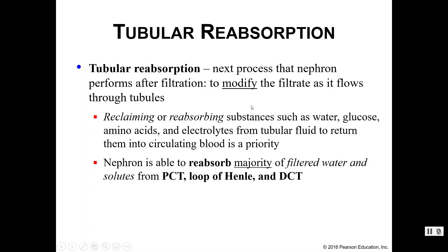Next is tubular reabsorption. After filtrate is created, we modify it as it goes through the renal tubule. You reclaim and reabsorb useful substances like water, glucose, amino acids, and electrolytes — quite a bit of the material in the filtrate will ultimately be reabsorbed, ending back in the blood where it can be used later. The nephron is able to reabsorb most of the filtered water and solutes along the entire length of the tubule — both the proximal and distal convoluted tubules as well as the loop of Henle are all responsible for tubular reabsorption.